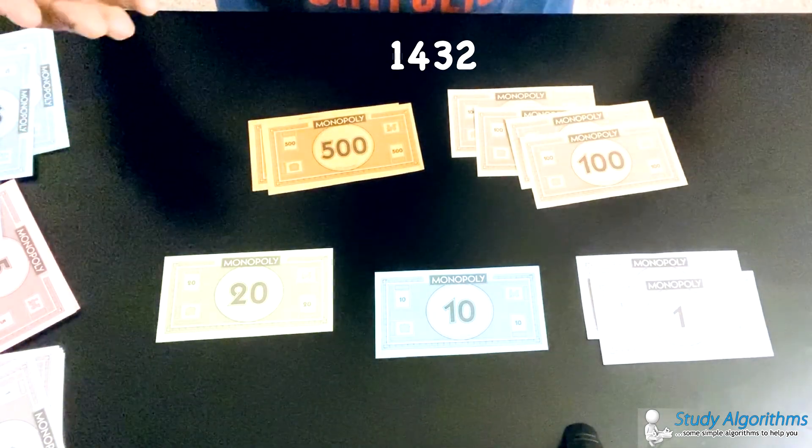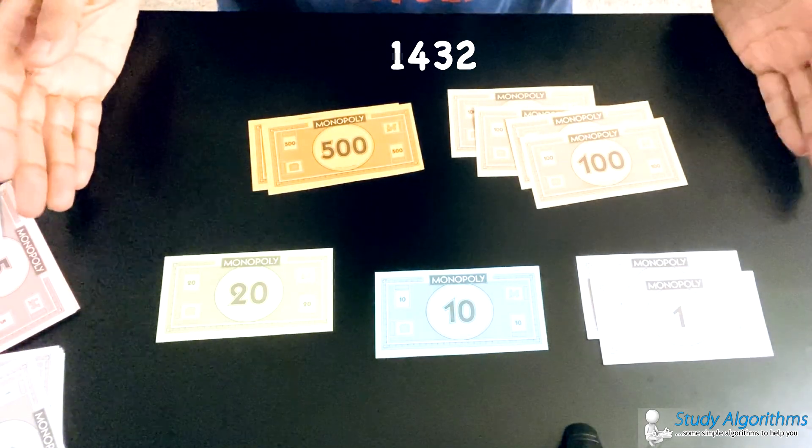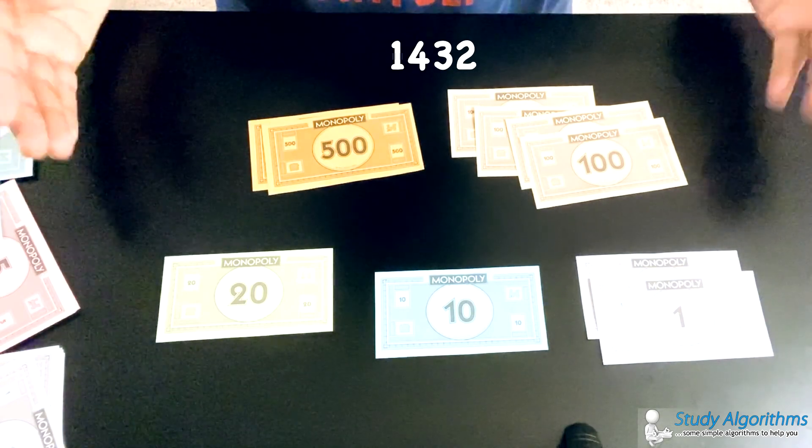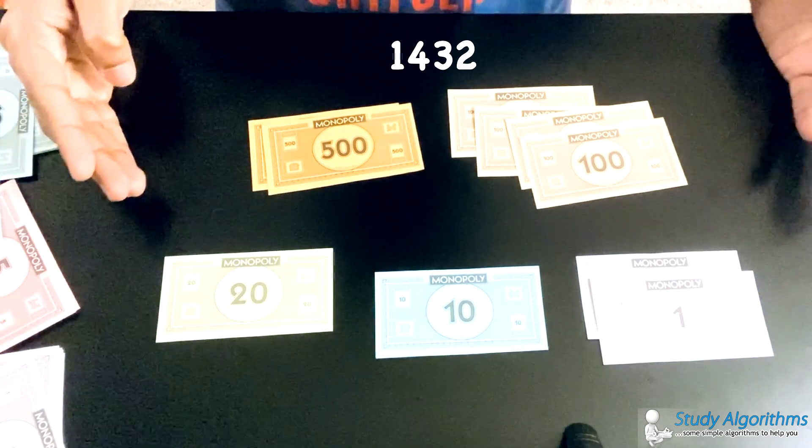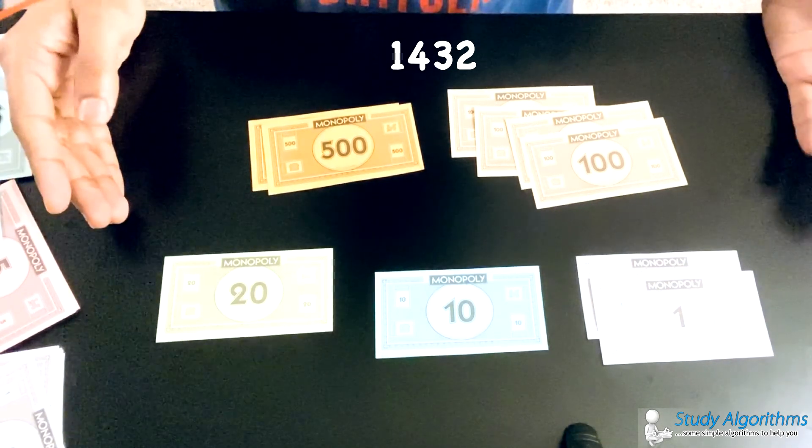So, this is the minimum amount of currency notes that I would be required if I need to give the player a sum of 1432. These are some simple ways you can use greedy algorithms in day-to-day life. So, the next time you are handing out change to a local shopkeeper or friend, just know that you are using a greedy algorithm.